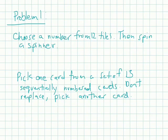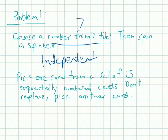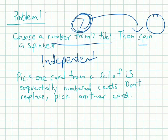So, problem number one says, choose a number from 12 tiles and then spin a spinner. Is this independent or dependent? This is independent, right? Meaning, if I choose number 1 through 12 and I get 7, the fact that I choose 7 has nothing to do with if I spin a red, a blue, or a green on a spinner. They're completely independent events from one another.